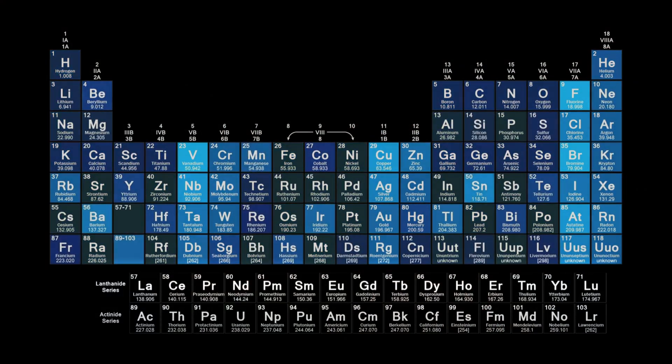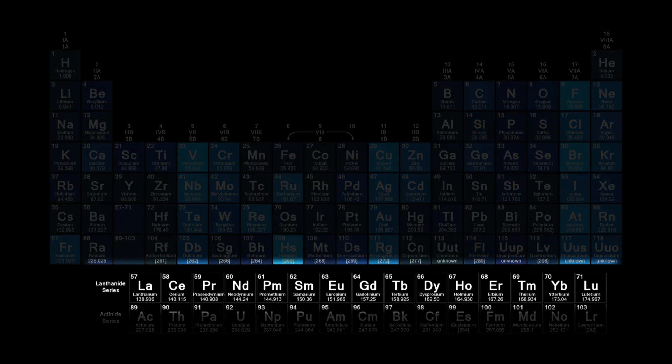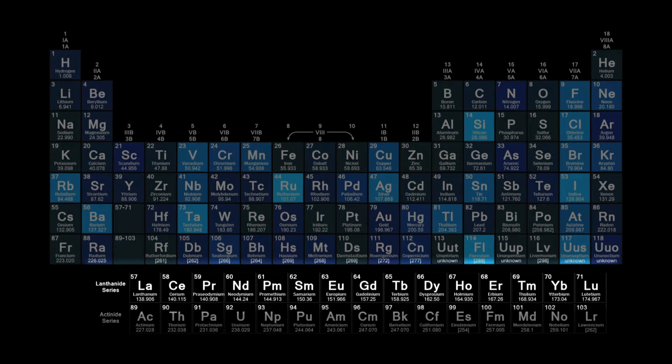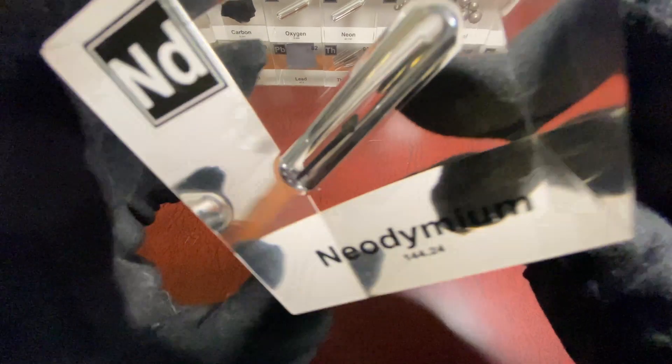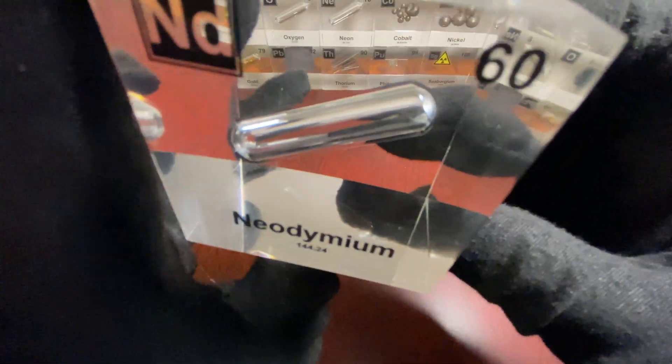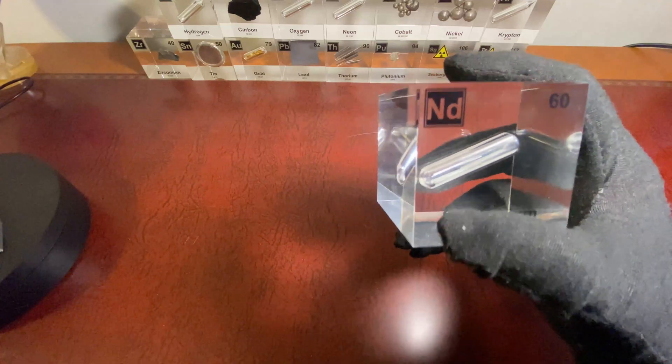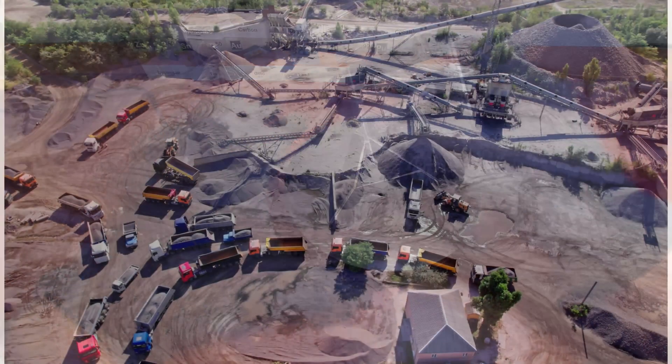Neodymium belongs to the lanthanide series of elements, which are often referred to as rare earth metals. Despite the term rare, neodymium is not particularly scarce. In fact, it is relatively abundant in the earth's crust, with a concentration comparable to that of nickel and cobalt. However, the challenge lies not in the scarcity, but in the complexity of extraction and refinement.